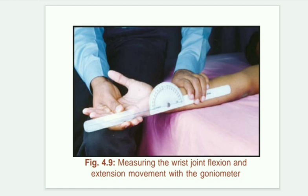about 0 to 80 degrees. The position is supine — supine is the best position to measure wrist flexion and extension. The fulcrum must be placed at the ulnar styloid process, the arm must be kept straight, and the palm must be facing upwards. The stationary arm must be parallel to the ulnar.